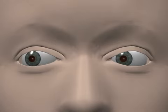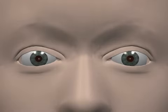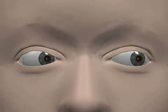Dextroversion is gaze to the right. The right eye is abducted and the left eye is adducted. Laevoversion is gaze to the left. The right eye is now adducted and the left eye abducted.